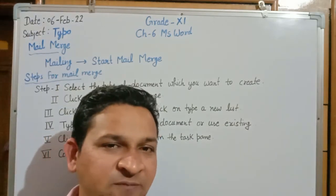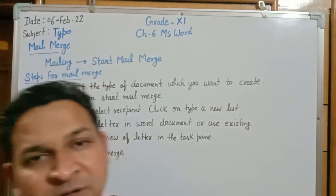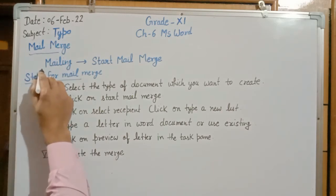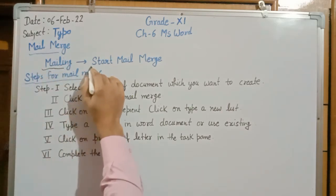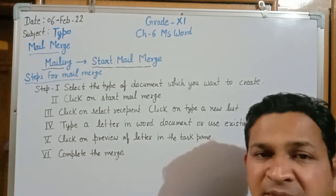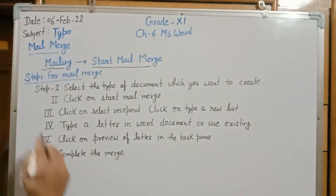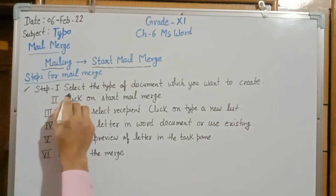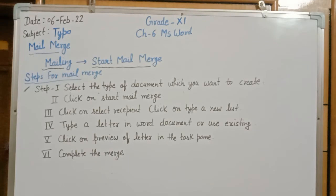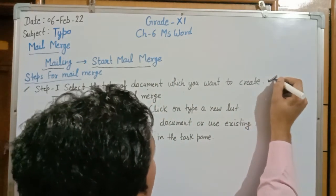MS Word provides the functionality to create a mail merge by following six steps. To start the mail merge, go to the Mailing tab and click on the Start Mail Merge option. The first step is to select the type of document you want to create — it can be a letter, an email message, an envelope, a label, or a directory.